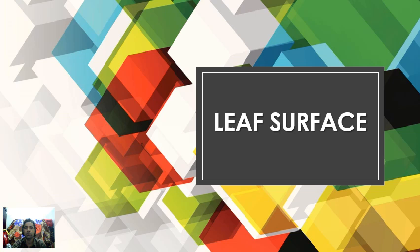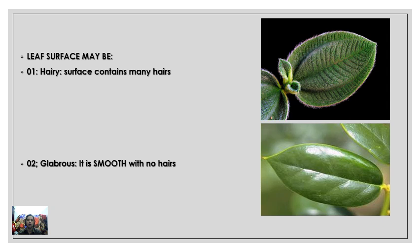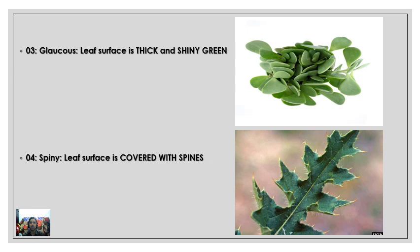Next is leaf surface. Leaves can look different on their surfaces. The first type is hairy — here you can see many minute hairs present on this leaf. This is called a hairy leaf. The opposite of that is the glabrous leaf, which is totally free of hair — it is completely smooth with no hair.